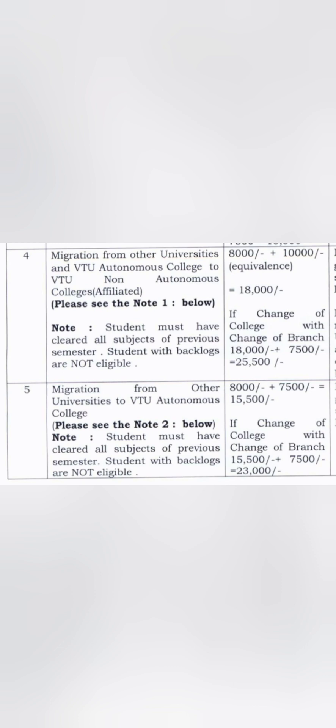The fifth category is for students moving from other universities like Dayananda Sagar University, Reva University, CMR University, or Presidency University to a VTU Autonomous College like RV College, BMS College, or MIT. Those students will have to pay 23,000 rupees, that is 15,500 plus 7,500. So there are five different types of migrations: non-autonomous to autonomous, non-autonomous to non-autonomous, any university to autonomous college, and university to non-autonomous college.